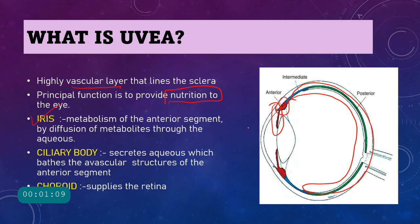The iris, present in front of the lens and forming the pupil, is responsible for metabolism of the anterior segment — that is the cornea and the anterior part of the lens — through diffusion of important nutrients into the aqueous humor present in the anterior chamber. Our cornea and lens do not have vascular supply, so their nutrition is supplied by the iris and the ciliary body.